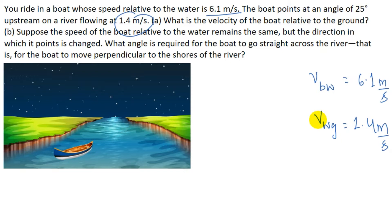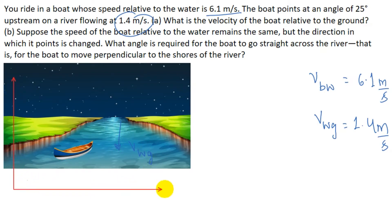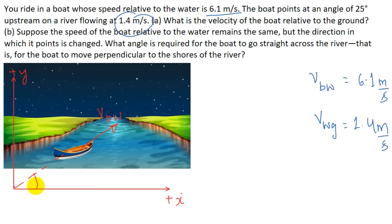There are two parts to solve. In part A, we need to find the velocity of the boat relative to the ground. First, I am taking the water flowing downstream — this is the speed of water relative to ground. I set up a coordinate system with positive x perpendicular to the river and positive y along the upstream direction. The boat points at an angle of 25 degrees upstream, so this is the direction for the velocity of boat with respect to water.